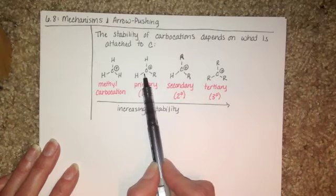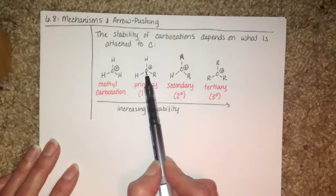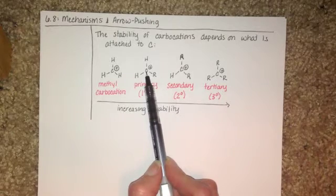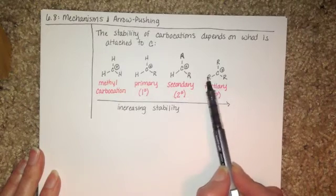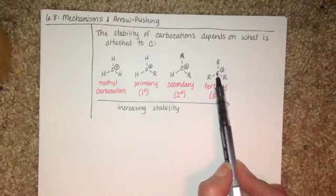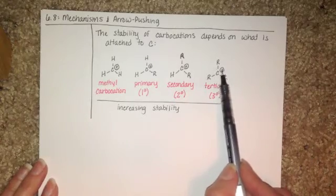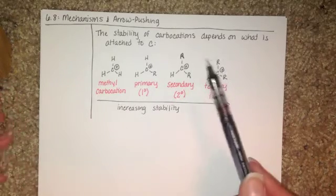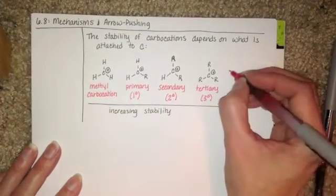On the primary carbocation, you have one alkyl group. It's going to dump a little bit of electron density into that positively charged carbon and it'll help to stabilize it. A tertiary carbocation has got three things dumping electron density into the positively charged carbon and all of that is helping to stabilize it and make that carbon feel less of the positive charge.